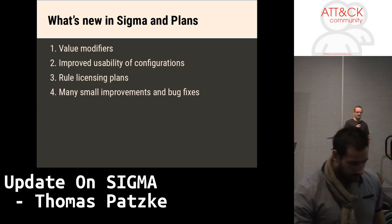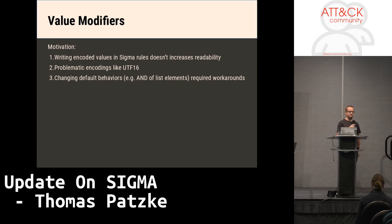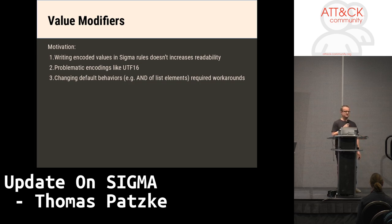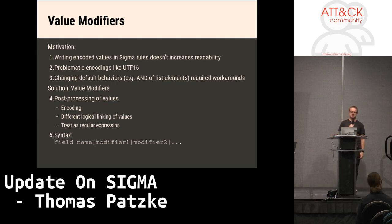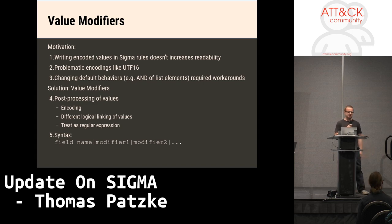What's new in Sigma and what are our plans? I'll start with the value modifiers. The motivation: many Sigma rules contained base64-encoded blobs and you weren't able to see what they contained. Some things were not easy to express, and sometimes default behaviors were not appropriate for how values or lists are handled in Sigma. This was the reason we introduced value modifiers, which allow encoding of values or treating values as something different — not as a plain value but as a regular expression, for instance.